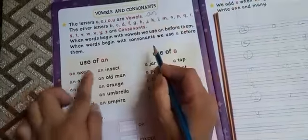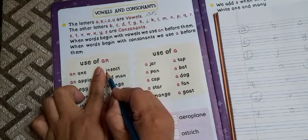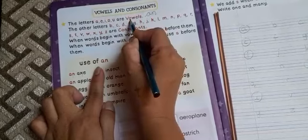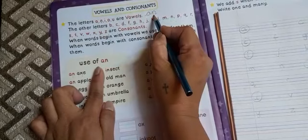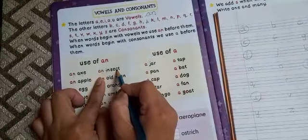More example. Insect. The first letter is I. See, I is a vowel. So we will use an. We will write an insect.